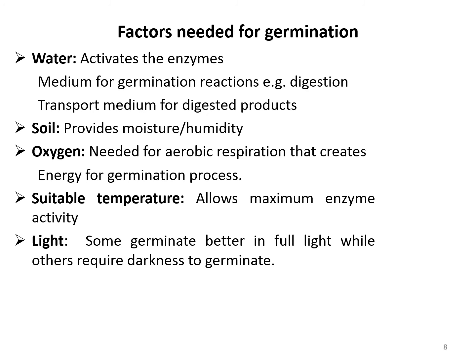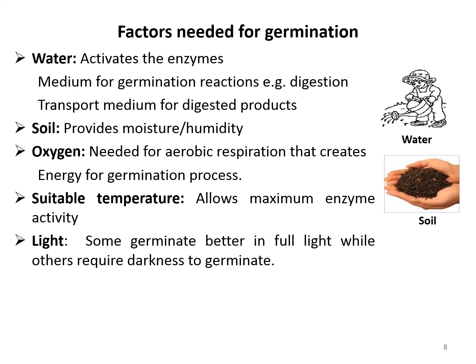Several factors are needed for germination. Even when the seed is fully mature, germination takes place only under certain specific conditions. The most important of these are water, soil, temperature, oxygen, and light. Water softens the seed coat and causes the cotyledon and endosperm to swell. The reserve food material stored in the cotyledon or endosperm is in insoluble form; water activates the protoplasm to secrete enzymes which make digestion of this food possible. Water also helps in the transport of digested food from the cotyledon or endosperm to the growing points of the embryo. Soil provides moisture and humidity.